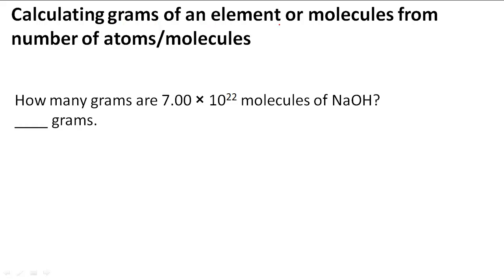Calculating grams of an element or molecules from number of atoms or molecules. In this problem it says how many grams are 7.00 times 10 to the 22nd molecules of NaOH. To figure out this problem we have to go from molecules to moles to grams.